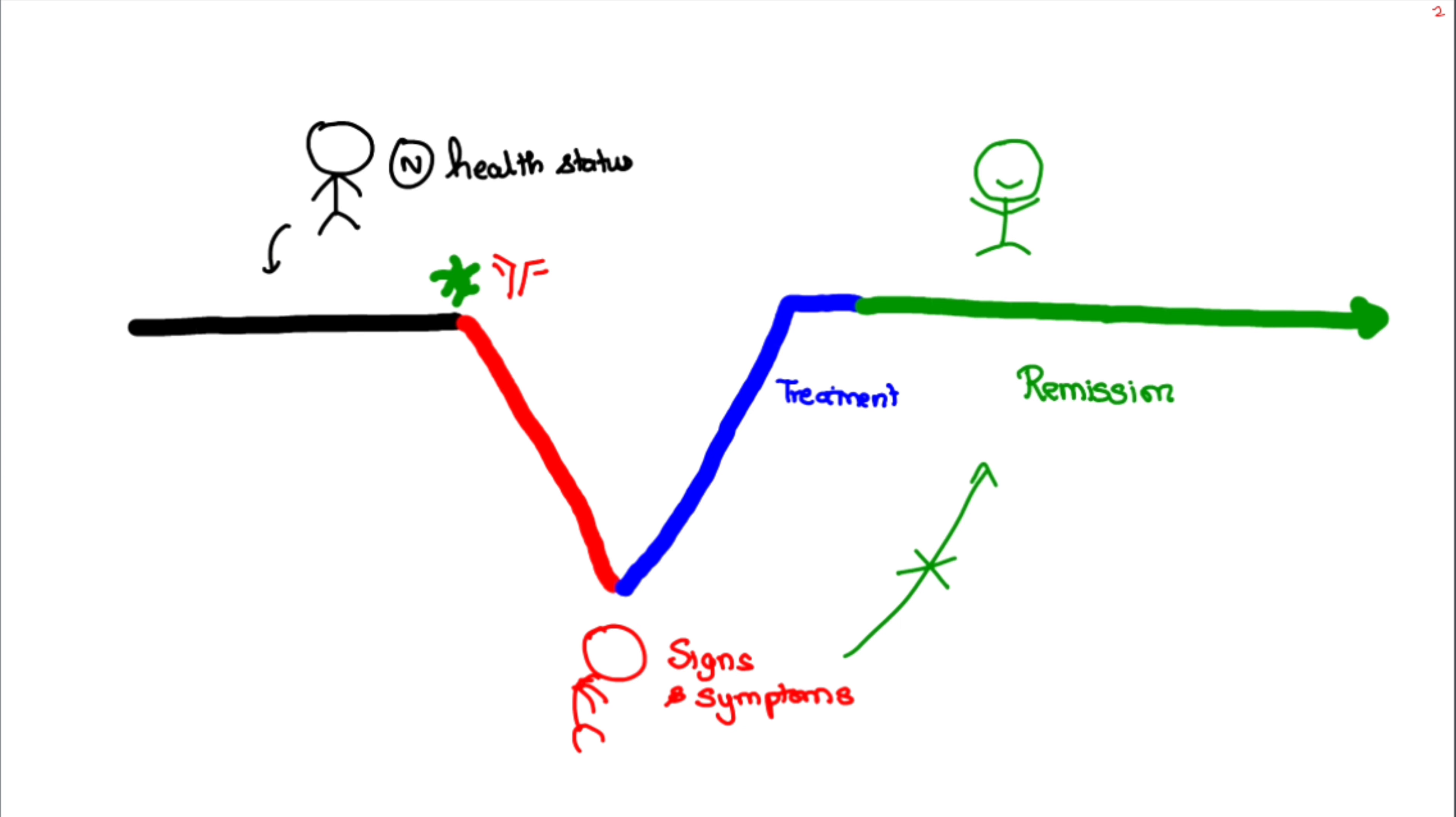From this we can infer that relapse is a return of symptoms of an ongoing episode that was symptomatically suppressed. Let's look at an example to make this concept clear.